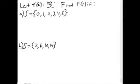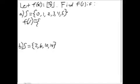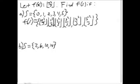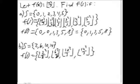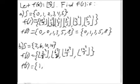Going the other way, if we let f of x equal x squared over 3, find f of S if S is the set of 0, 1, 2, 3, 4, and 5. We do the same thing and just plug those numbers into the equation and simplify, and get 8. If S is the set of 2, 6, 10, and 14, and if we simplify that, we get f of S equals the set of 1, 12, 33, and 65.